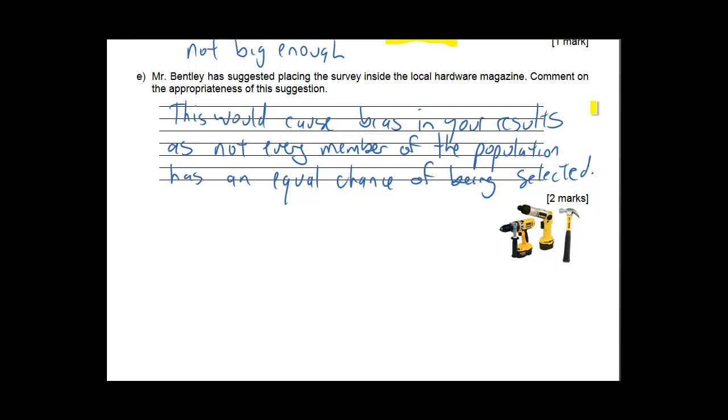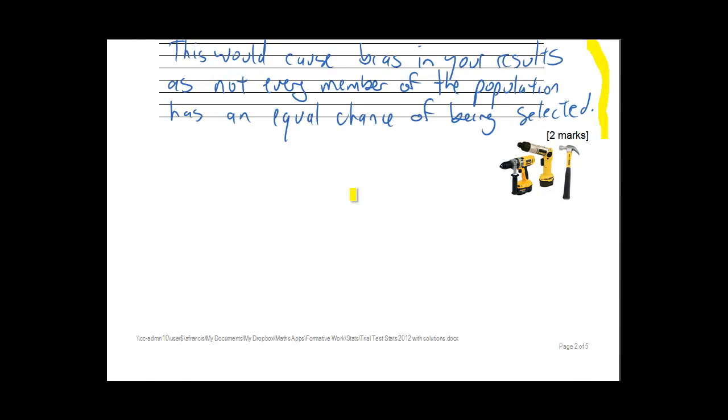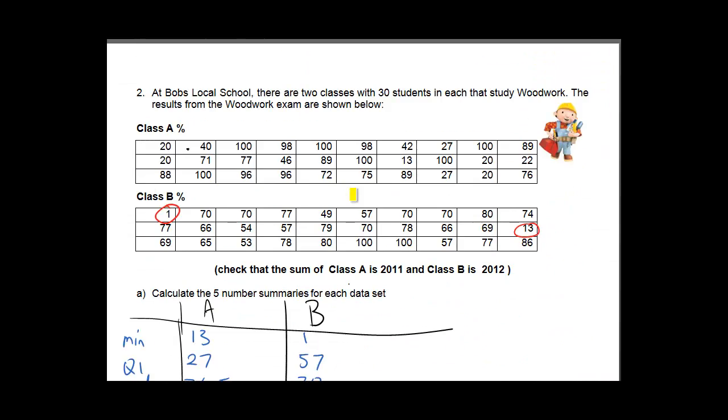The reason for it is that not every member of the population has an equal chance of being selected. And remember that's the definition of a random sample. A random sample is when every member has an equal chance of being selected. So when that doesn't occur there's a chance that bias is going to come into your results. So this would cause bias in your results as not every member of the population has an equal chance of being selected.